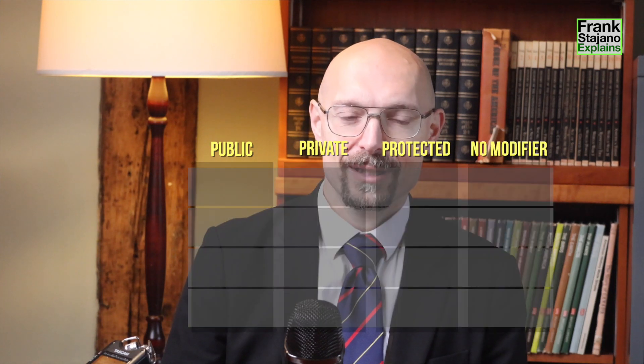You think you are a good programmer and you understand object orientation. Can you answer a pretty basic Java question that trips many people up? Let's have a look. In Java, what part of a program can access a class member that is marked public, private, protected, or not marked at all? Please fill in the entries in this matrix.